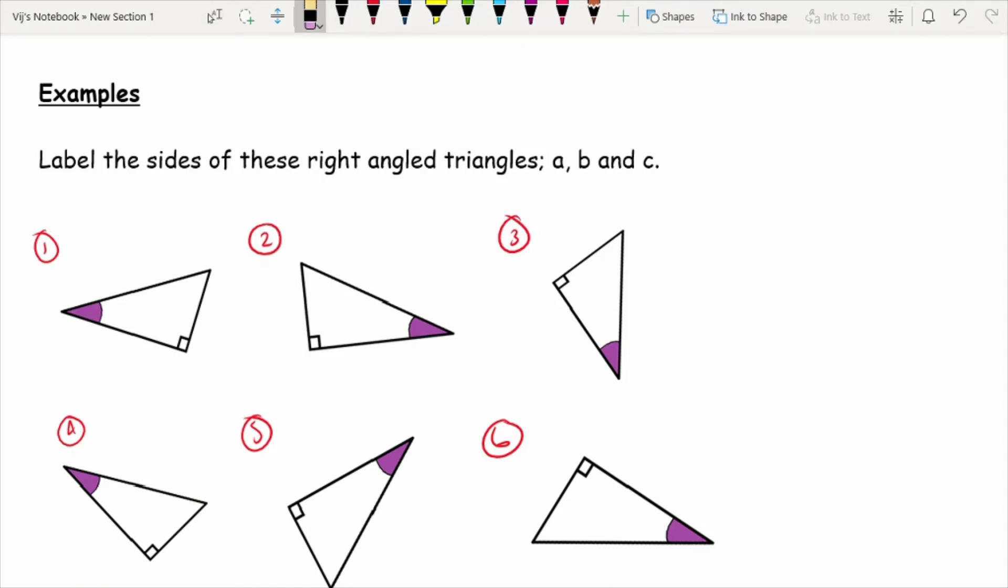Now, with regards to the first question here, so again, always starting with C. So I'm highlighting where my right angle is. And I label the opposite side as C. And your other two sides are going to be A and B.